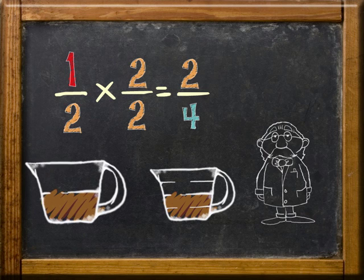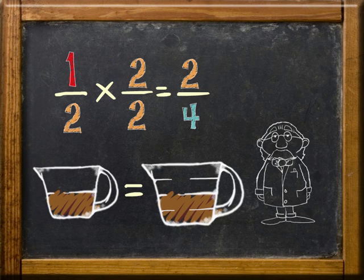If you think about it, one-half cup of brown sugar has the same amount of brown sugar as two-fourths cup.